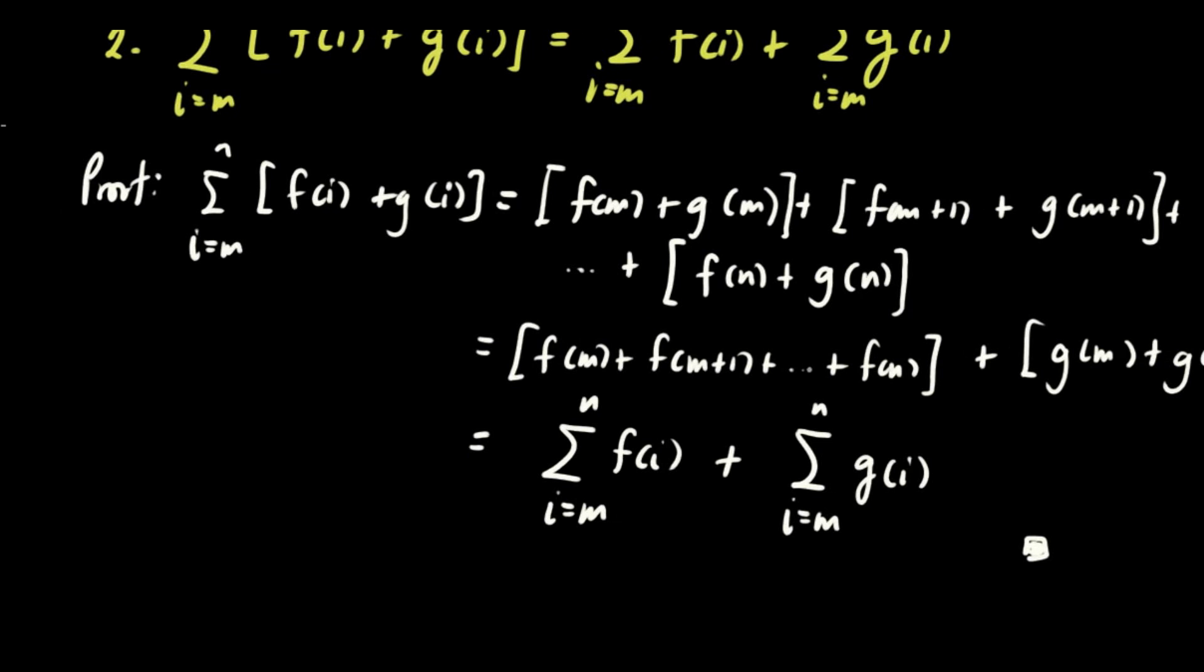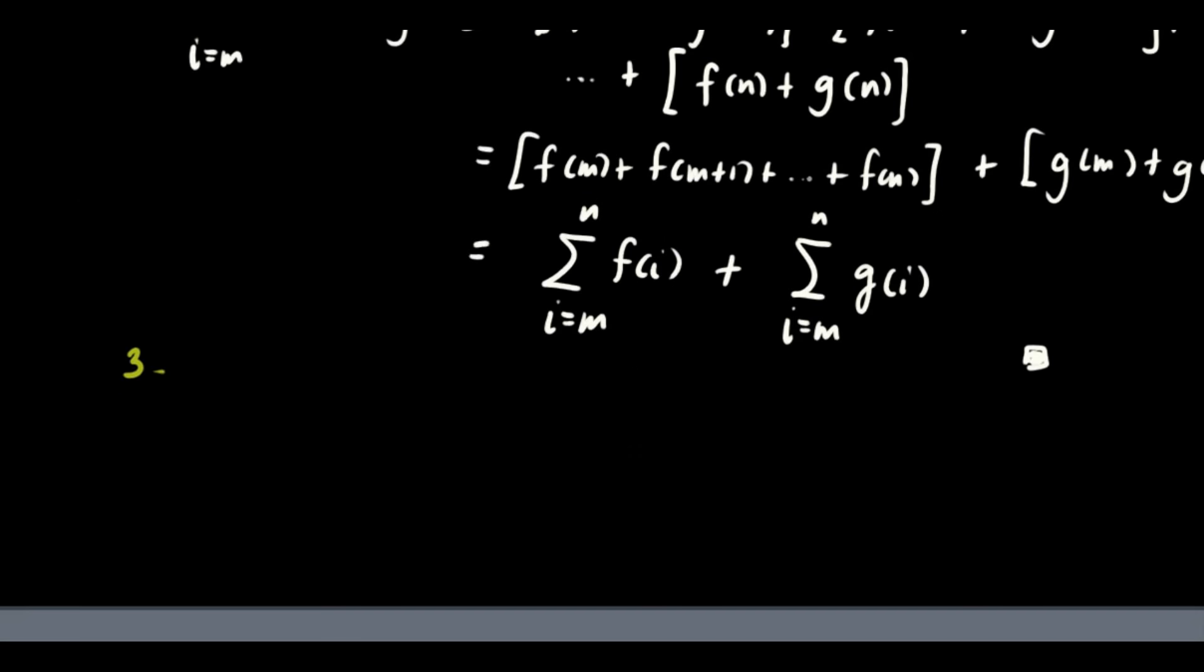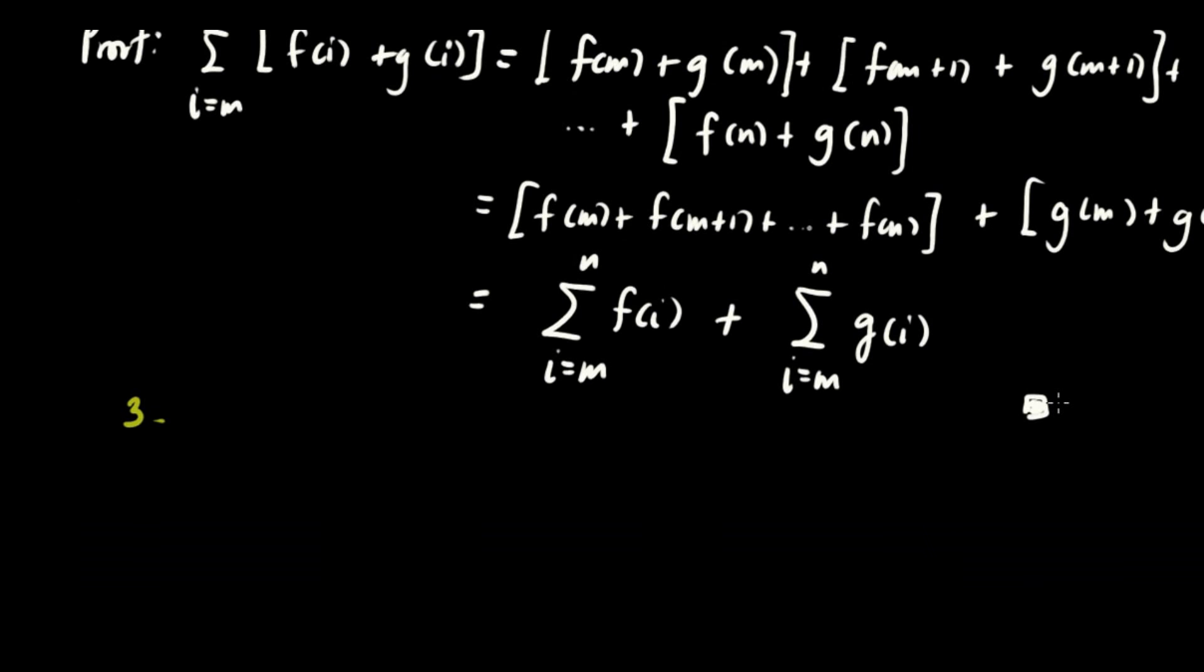Let's have number 3, third one. For the third one, we have the summation of c from i equals m to n is equivalent to c times n minus m plus 1. For this case, I will not show the proof like this one. Testingin na lang muna natin. c is any constant.